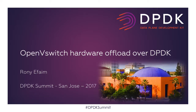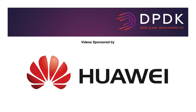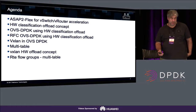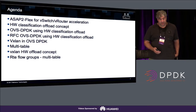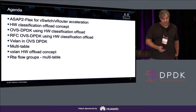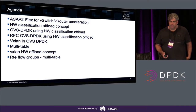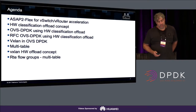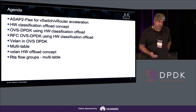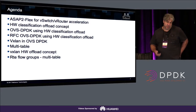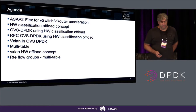I want to talk about ASAP² — this is a Mellanox term for vSwitch and virtual router acceleration. I want to talk about hardware classification offload, how it's done in OVS DPDK, an RFC that we are pushing, and the performance of it. And at the next level, how we want to do it with VXLAN as well, which will require multi-table support.